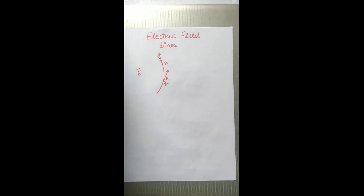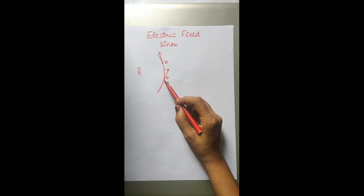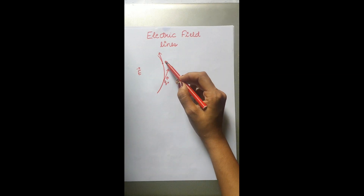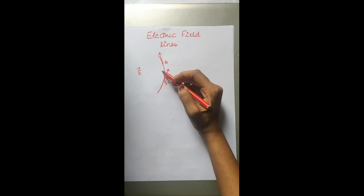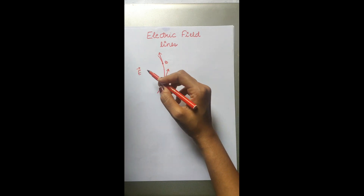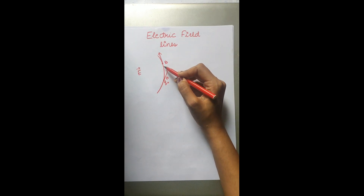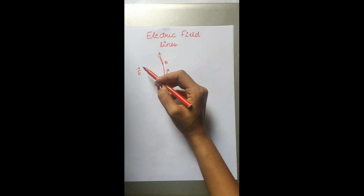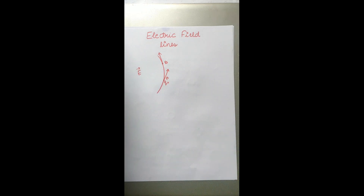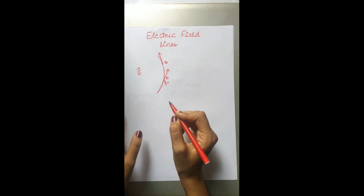So if I want to define it: an electric field line is the curve along which a small positive charge would tend to move when free to do so in an electric field, and the tangent to which at every point gives the direction of the electric field. Now let's talk about some important properties of electric field lines.